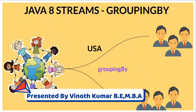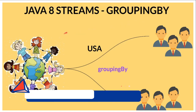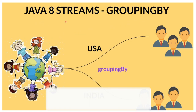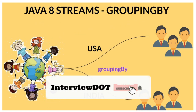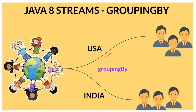In this video I'm going to talk about how to use the groupingBy API in Java Streams. For example, there are a lot of people from different countries and I would like to group them by their country — for example, creating a group of people from the USA, another from India, and so on. How can we do that using the groupingBy API?